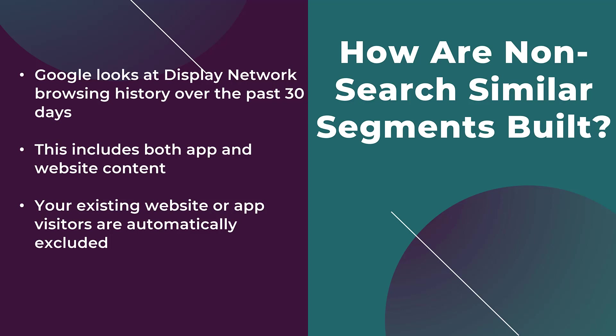Anyone already visiting your website or app is automatically excluded from your similar segments. So if you're using a website-based retargeting audience in another ad group, you don't have to worry about those signals overlapping. For any non-search similar segment, you need at least 100 visitors in the original data segment. Google will look at how recently users joined the list and also the types of websites these visitors browse, to confirm a pattern of similar behavior on the display network.